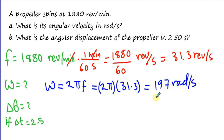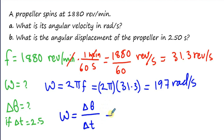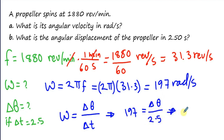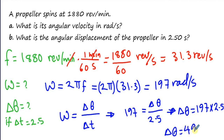To find the angular displacement, we use the equation omega equals delta theta divided by delta t. Substituting: 197 equals delta theta divided by 2.5 seconds. Therefore, delta theta equals 197 times 2.5, which equals 492 rad. That's it — thank you.